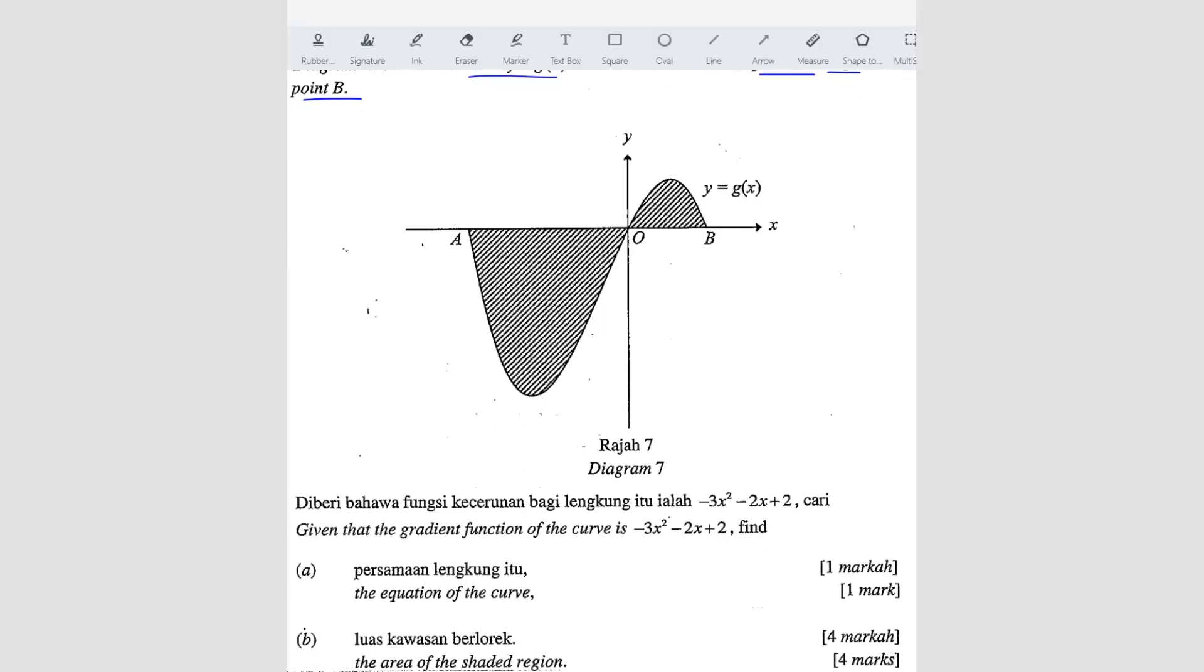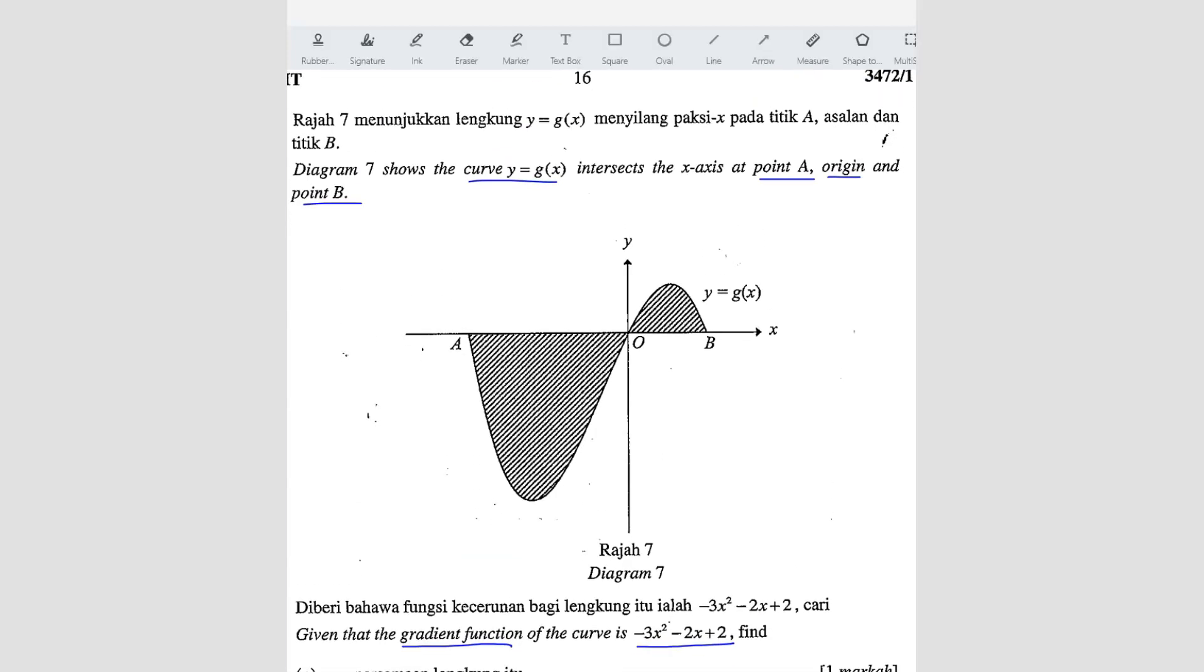Given the gradient function, so gradient function means dy/dx of the curve is negative 3x square minus 2x plus 2. Find the equation of the curve. So question A. Before we go to question A, they give you dy/dx equals to negative 3x square minus 2x plus 2.